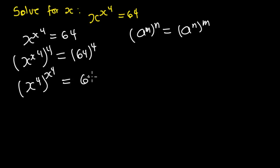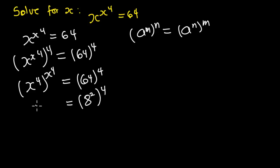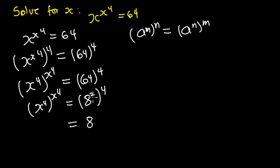On the right-hand side we can express 64 as 8 exponent 2, all to the exponent 4. So the right-hand side gives us 8 to the power of 2 times 4, which is 8 to the power 8, and this equals x^4 all exponent x^4.